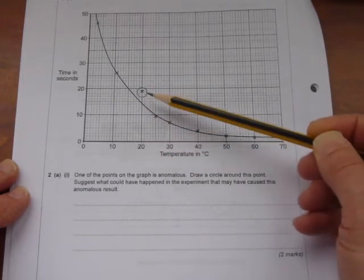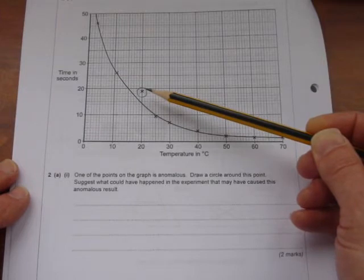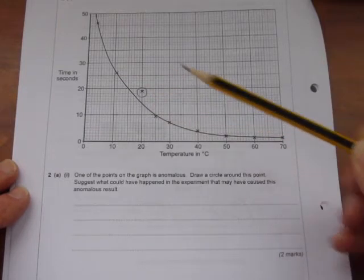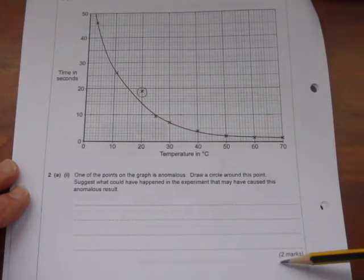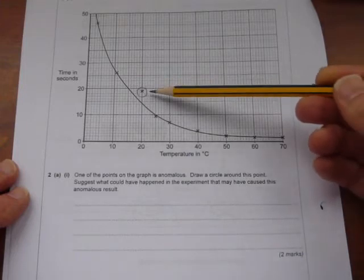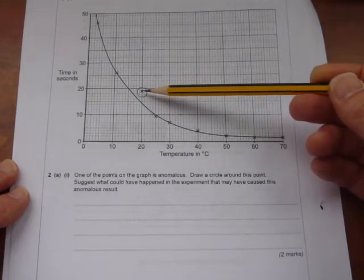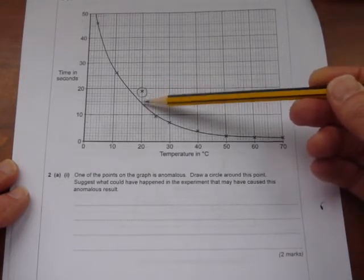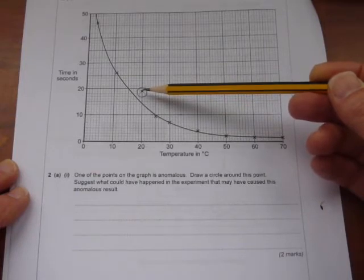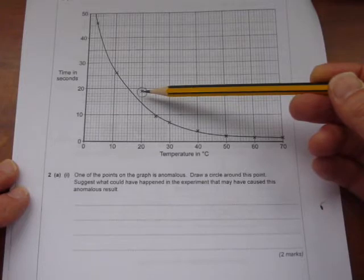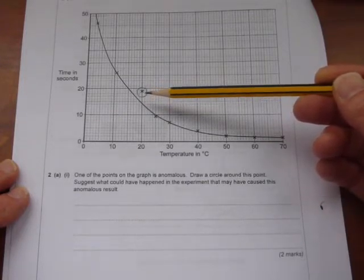Don't just say they timed it wrong, or the temperature was wrong, or they used the wrong concentration. For the second mark, to be sure of scoring that, think about whether the result is higher or lower than it should be. In this case, the time taken is longer than it should be. The reaction is slower, so either the temperature was lower or one of the reactants was perhaps a lower concentration.